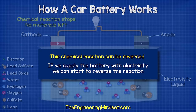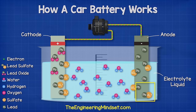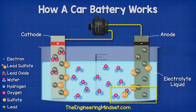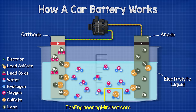Luckily, this chemical reaction can be reversed. If we supply the battery with electricity from the alternator we can start to reverse the reaction. The electrons enter the negative terminal and rejoin with the lead sulfate, releasing the sulfate into the electrolyte to leave just lead on the negative plate.